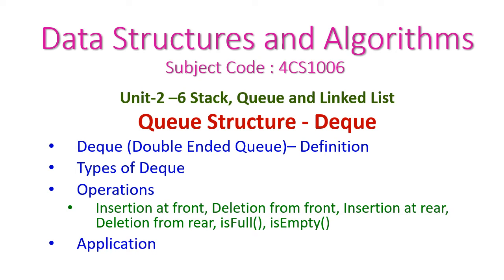In today's data structure class, we will see DEQ — double-ended queue from the second unit. In this class, we will see the definition of DEQ, types of DEQ, and some of the operations like insertion at front, deletion from front, insertion at rear, and deletion from rear. After that, we will check if the DEQ is full or empty, and then we will see the applications of DEQ.